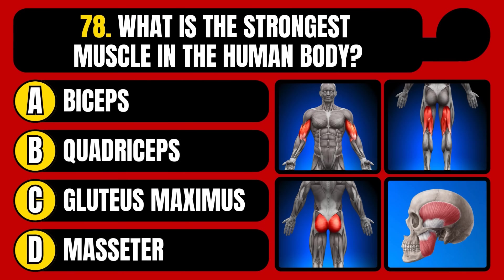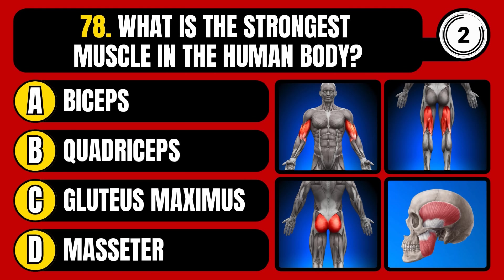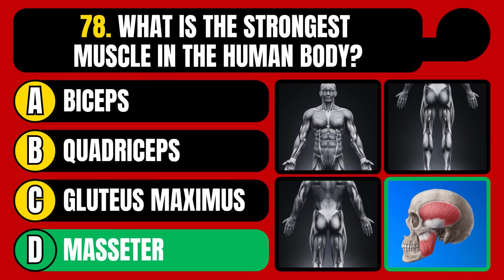What is the strongest muscle in the human body? Biceps, quadriceps, gluteus maximus, or masseter? The correct answer is option D, masseter.